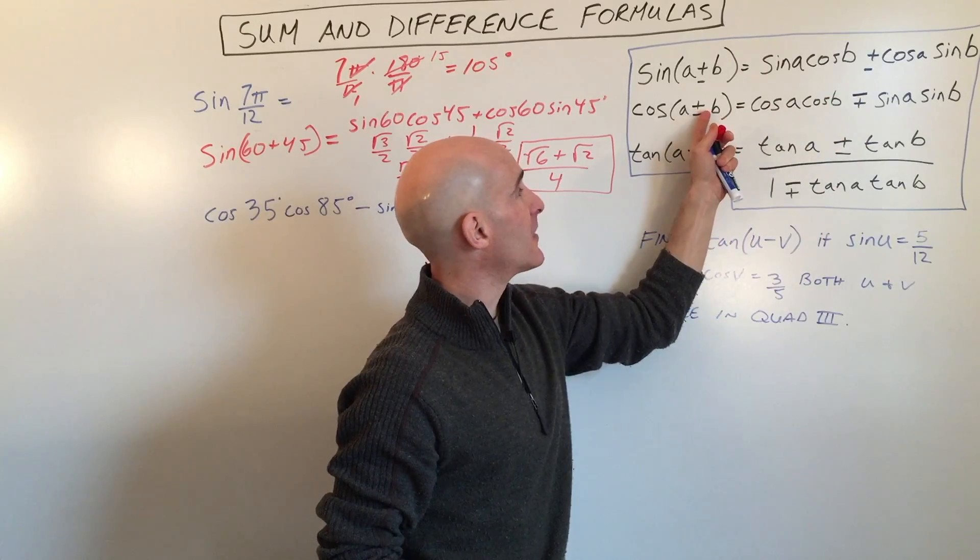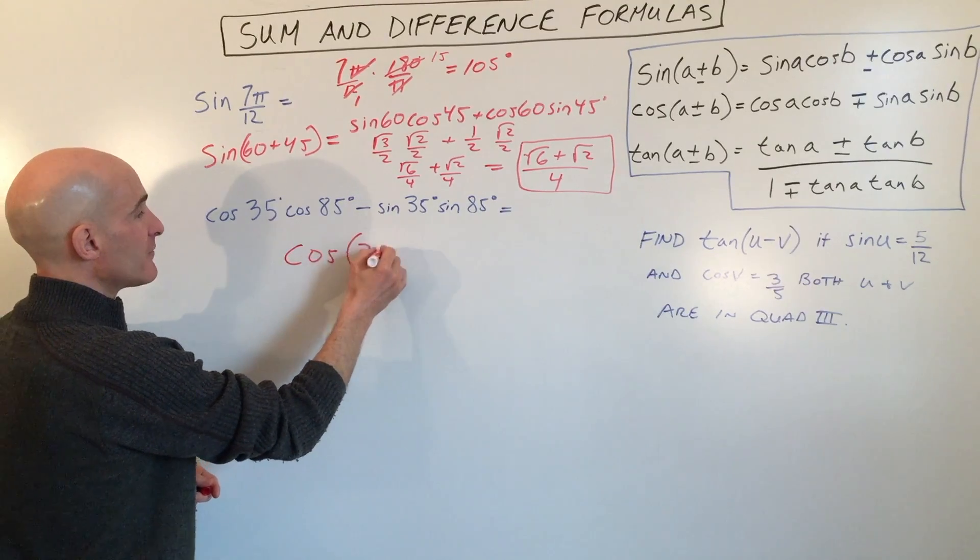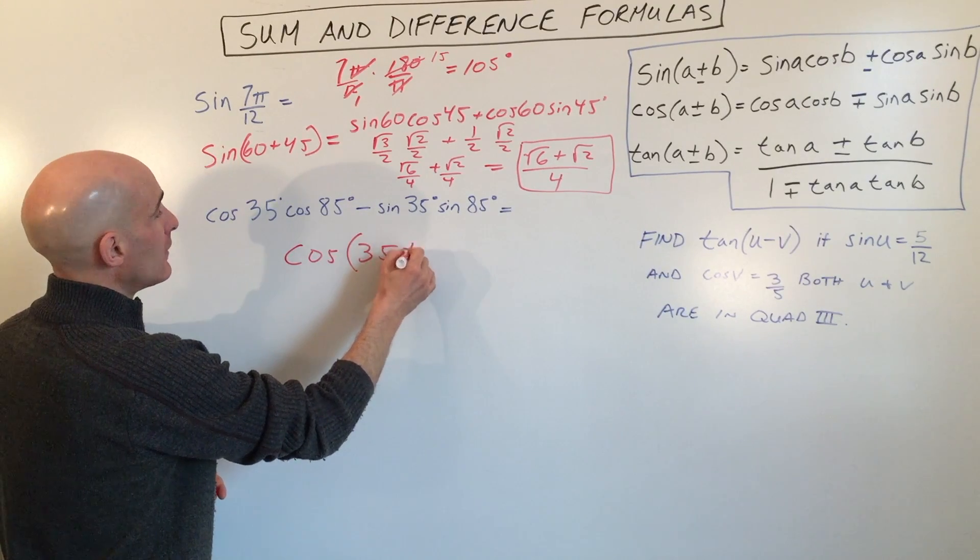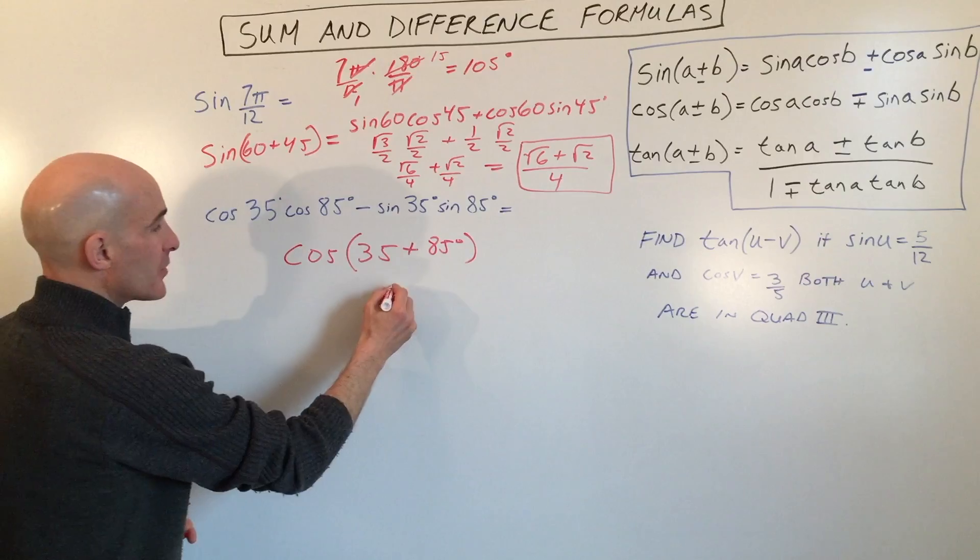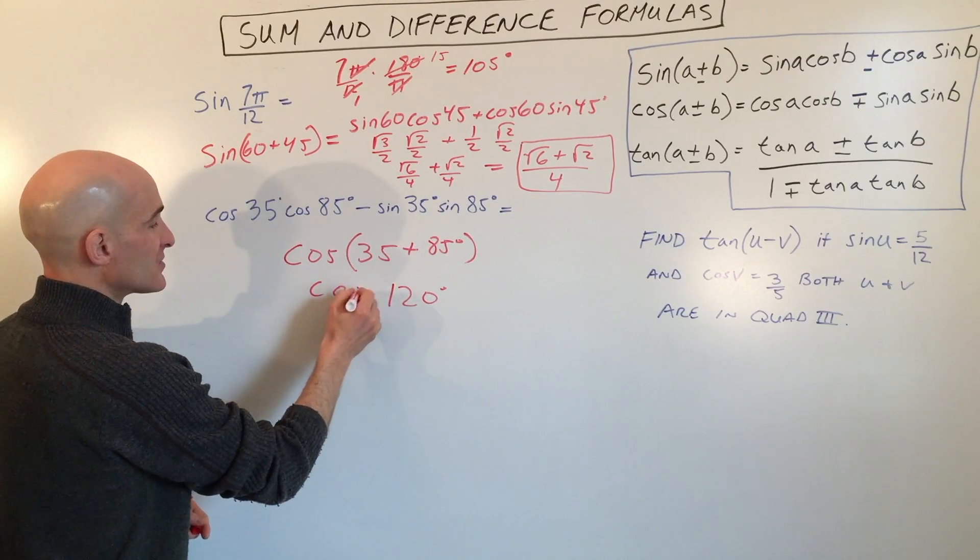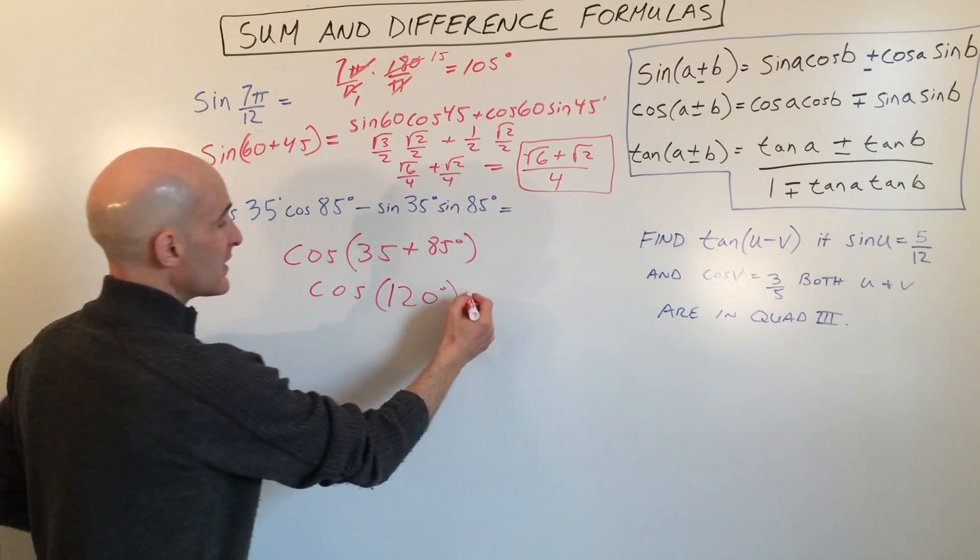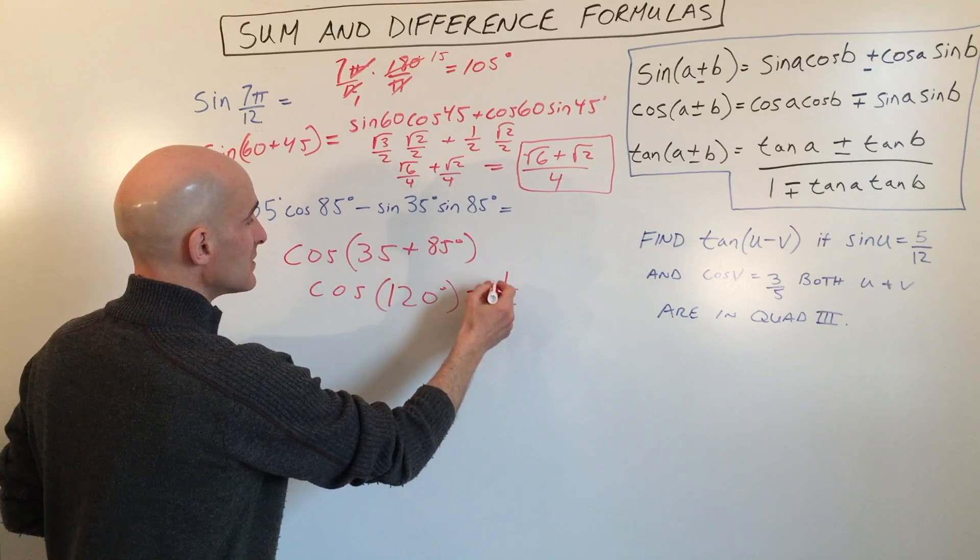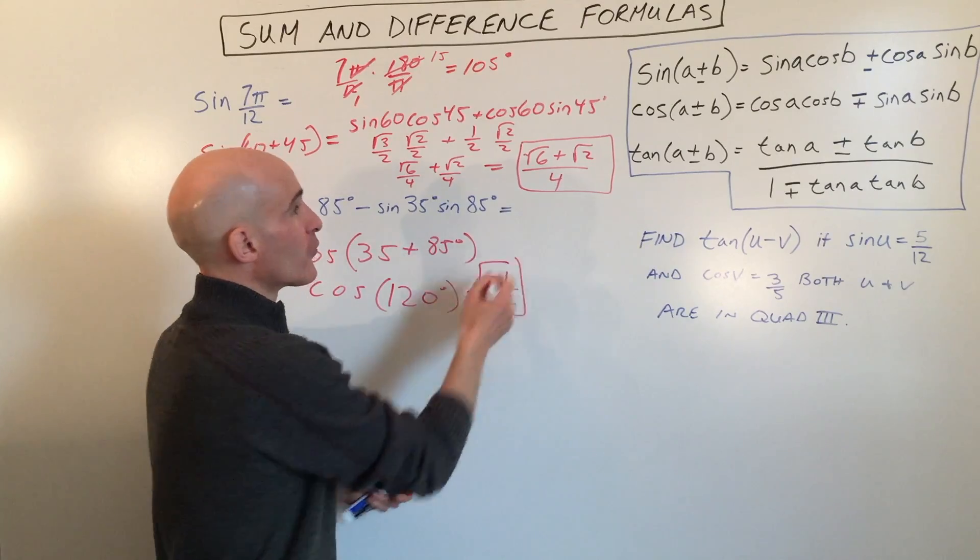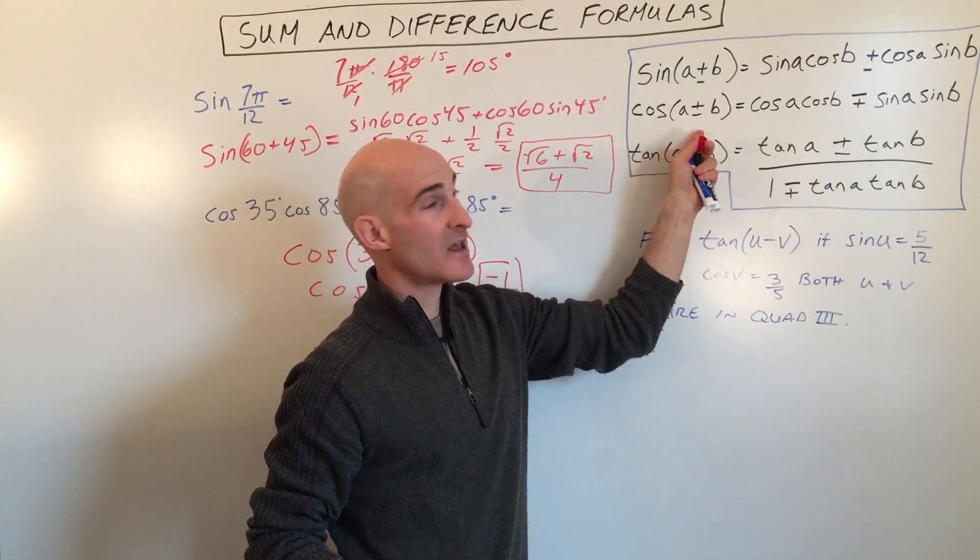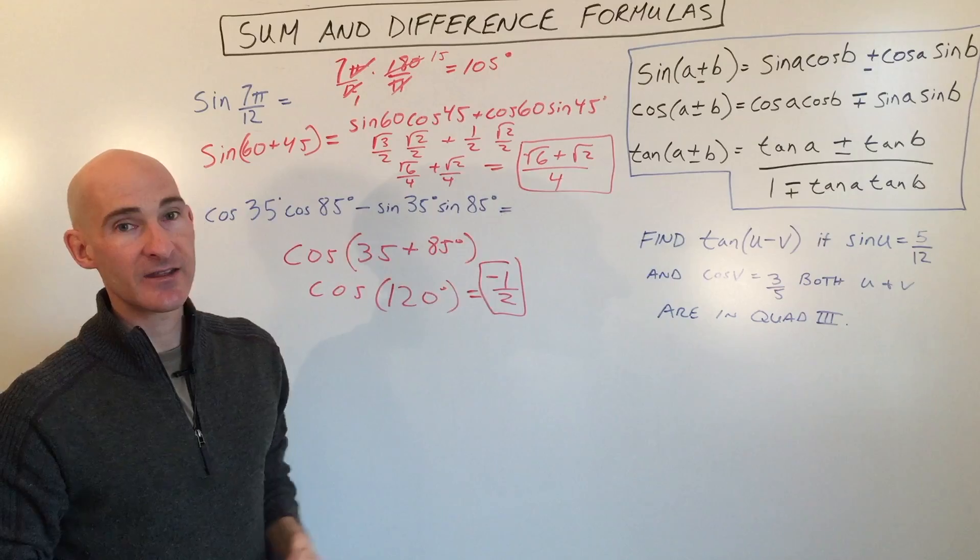Because these are the opposite for cosine. So here what we have is cosine of 35 plus 85. 35 plus 85 is 120 degrees. So this is cosine of 120. And we know from our unit circle, cosine of 120 equals negative 1 half. So that's how we work with the formula in reverse. So they're giving us the right side and we're condensing it to the left side. In this first problem, they gave us the left side and we expanded to solve using the right side of the identity.